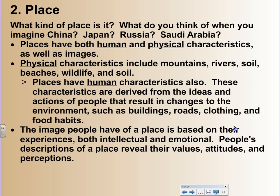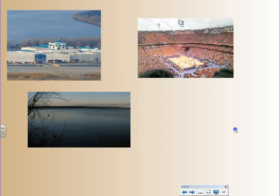Then you have place. Place is where we answer the questions: what kind of place is this? What do you think when you imagine China, Japan, Russia, Saudi Arabia? Places have both human and physical characteristics as well as images. Physical characteristics include the mountains, rivers, soil, beaches, and wildlife. Places also have human characteristics derived from the ideas and actions of people that result in changes to environments, such as the buildings they make, the roads, clothing, and food habits. The image people have of a place is based on their experiences, both intellectual and emotional — people's descriptions of a place reveal their values, attitudes, and perceptions. Examples of places within Syracuse: Destiny, the Carrier Dome, and Onondaga Lake.